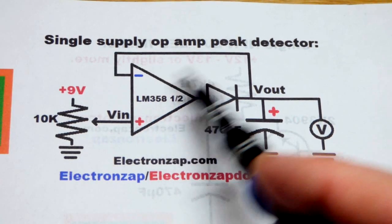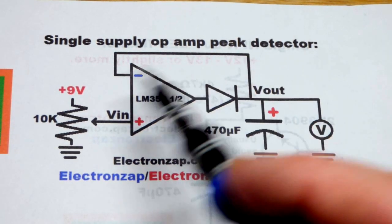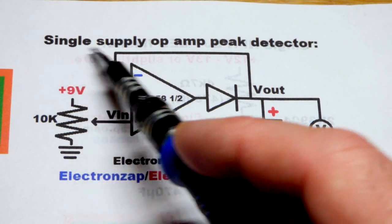So now in this video, we're going to use an op amp as a peak detector. That's how we have it wired up. We're going to use a single supply.